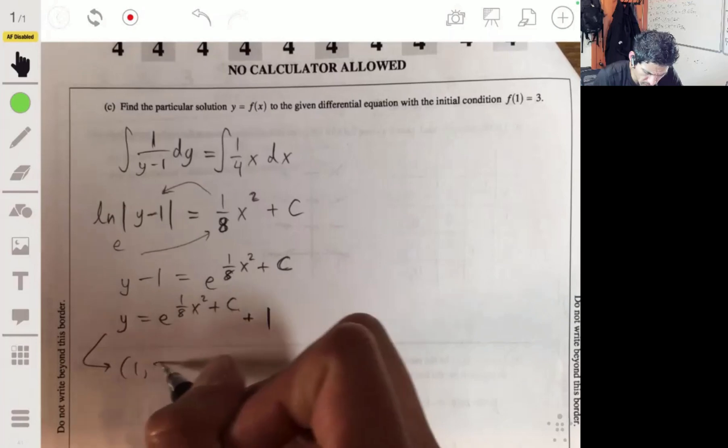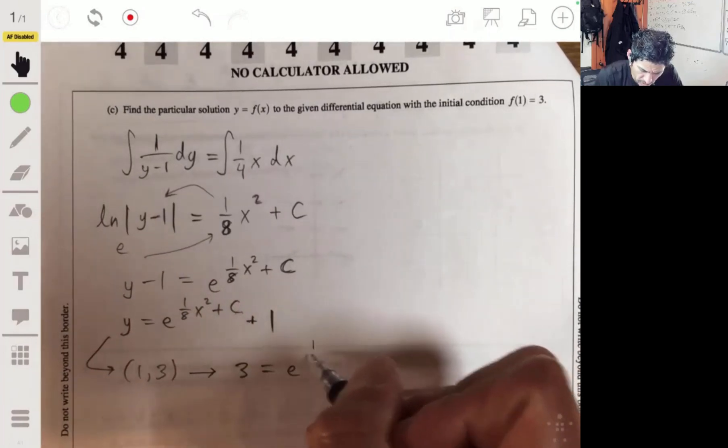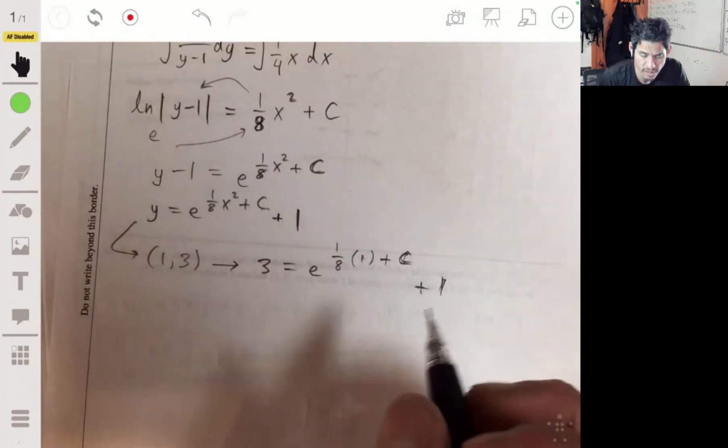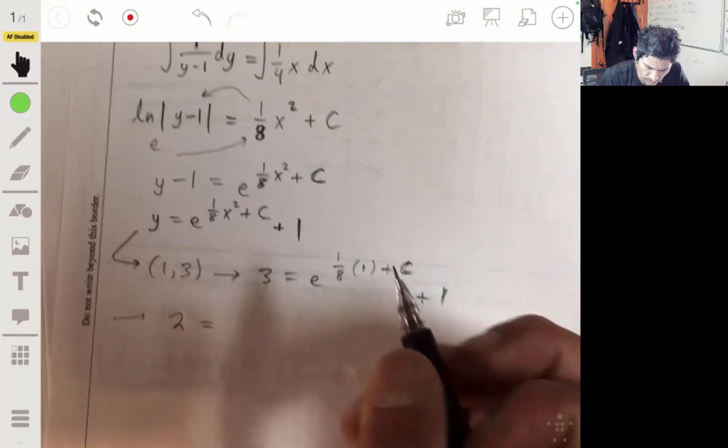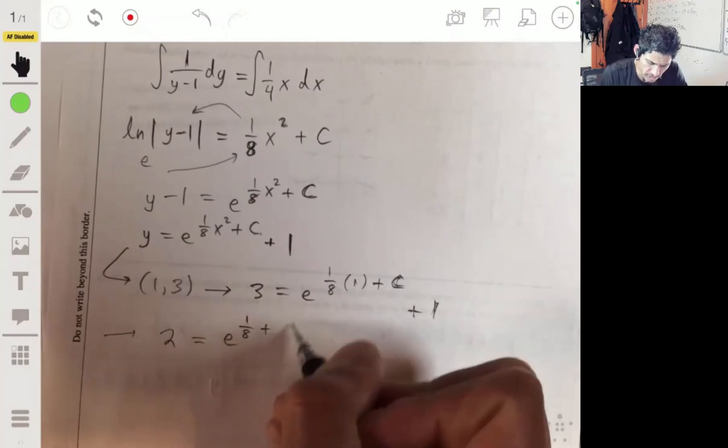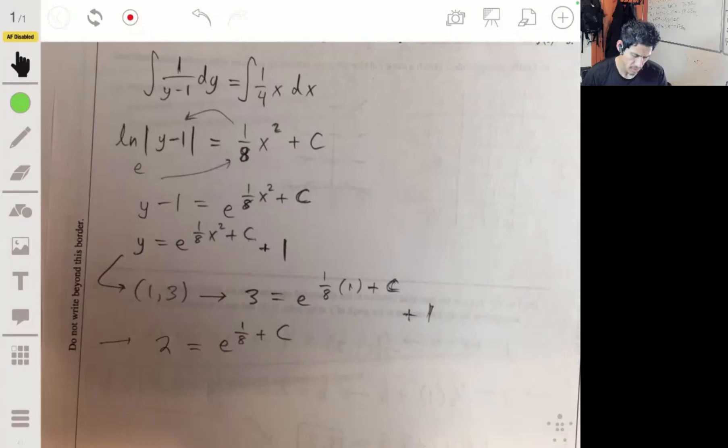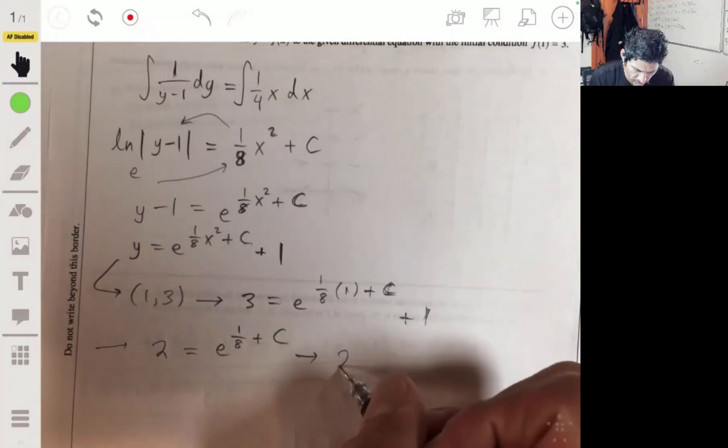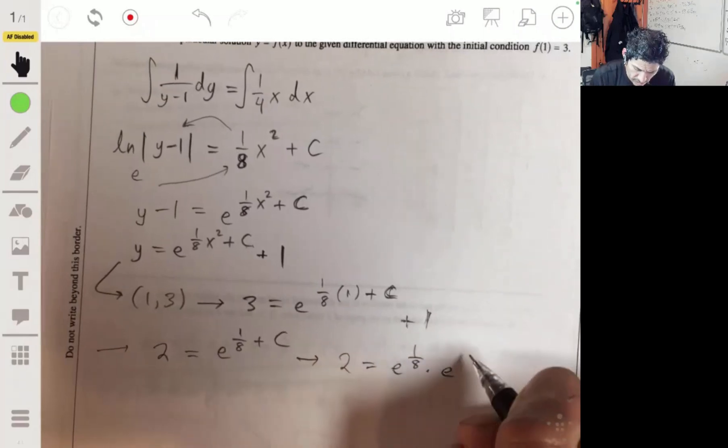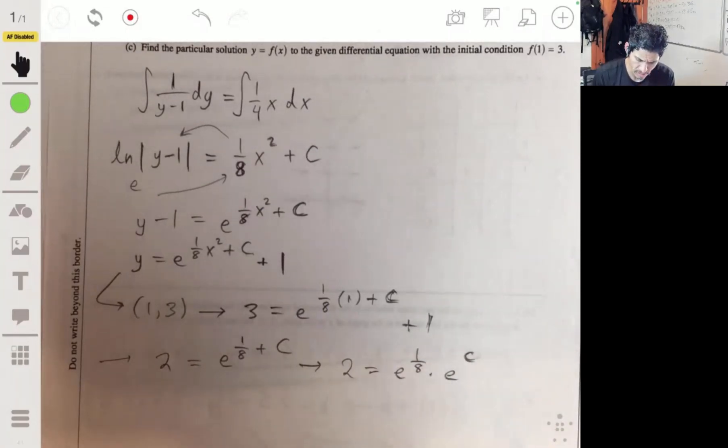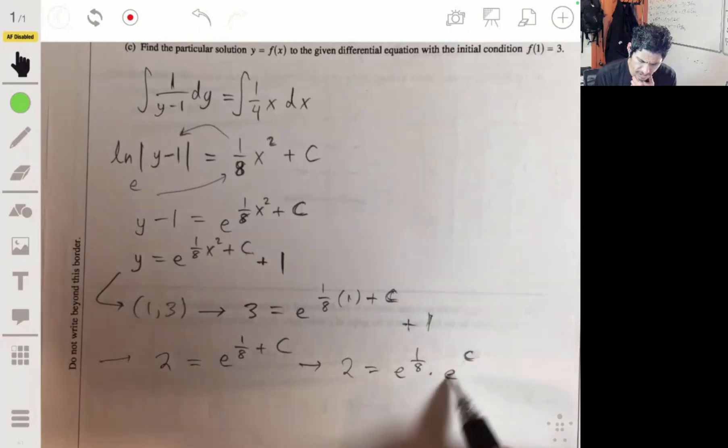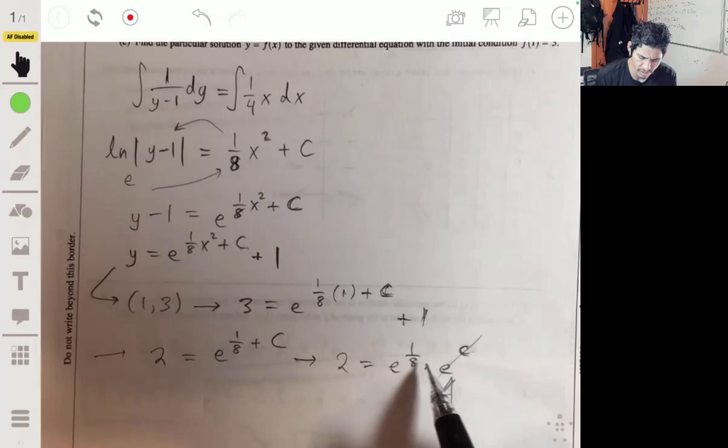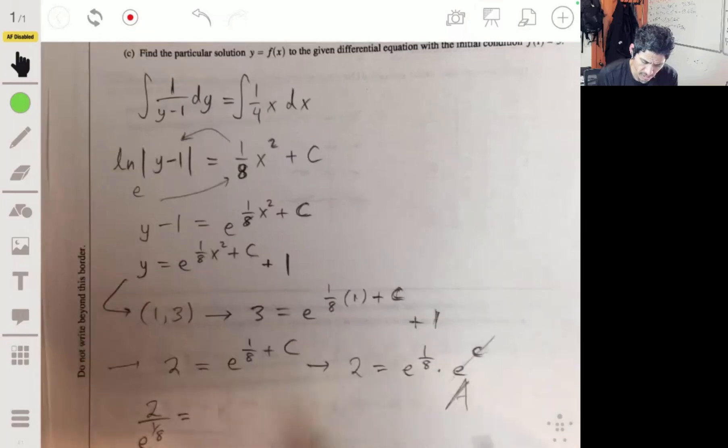So using (1,3), we'll have 3 equals e raised to the one eighth times 1 plus c, and let's not forget the plus 1 here. Taking away 1 we get 2 equals e to the one eighth plus c. So this is going to be interesting. Then this is, remember this is the same as using power rules: 2 equals e to the one eighth times e to the c, because you can just add those. So then this is just going to be some constant coefficient. Let's call that A, so we have A times e to the one eighth equals 2. E to the one eighth is some number, so what we're going to do is have 2 divided by e to the one eighth, and that will equal A. This will be the coefficient that we're trying to find.